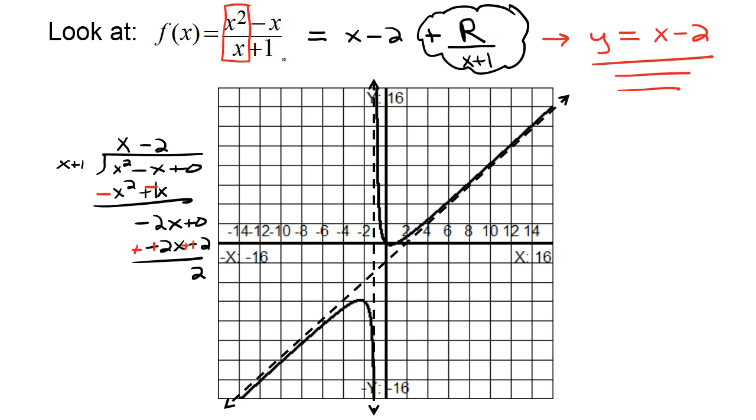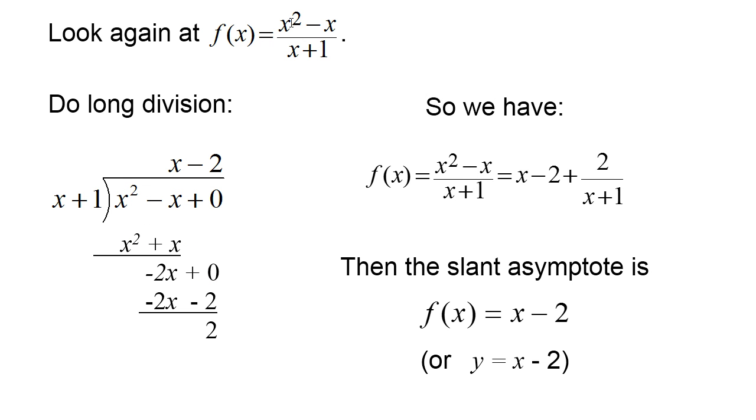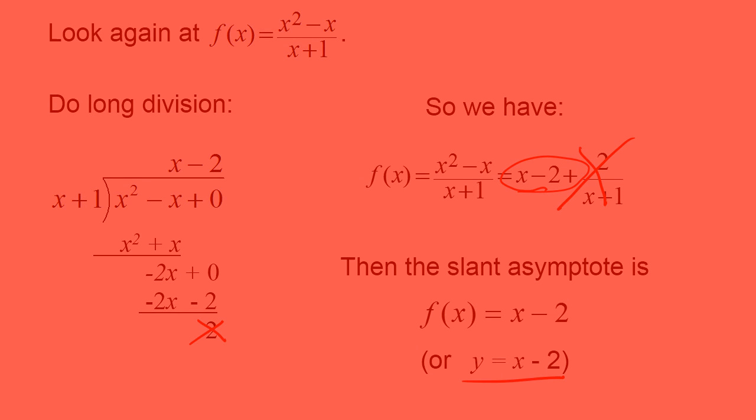So in essence, here's the rule. If this exponent is exactly one bigger than the one in the denominator, do the long division, ignore the remainder, and whatever this is, set y equal to it, and that's your slant asymptote. So let's look again at this problem. If you see that the exponent in the numerator is exactly one larger than the exponent in the denominator, do the long division, ignore the remainder, and the slant asymptote is going to be f at x equals x minus 2, or you could just say y equals x minus 2.